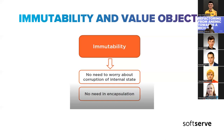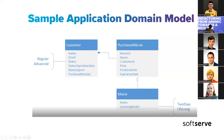A typical value object is a class with a private constructor and one factory method which performs some checks against business rules when you create the object, and then creates an instance. These objects are not primitive types — we need to try to avoid primitive types and instead combine different primitive type properties into one logical object which keeps the state of some business part of our application according to business rules.